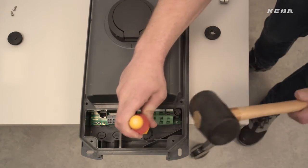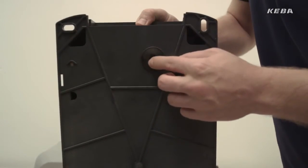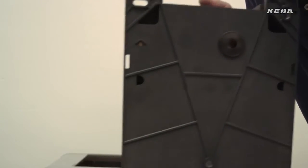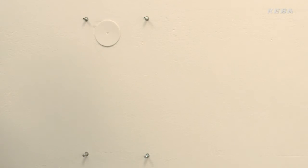In case of a flush mounted installation, make sure that the rubber seal for the cable inlet at the rear of the wallbox encloses the cable fed in fully and securely.